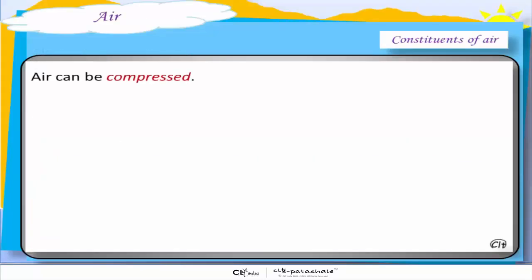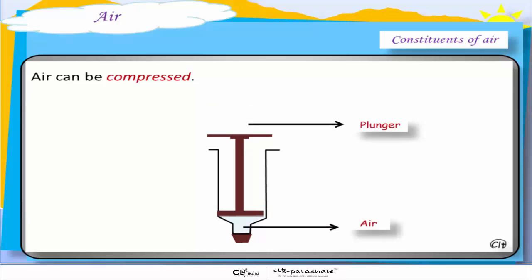Now, air can be compressed. This is the action of a piston where the plunger compresses the air. This is something we use to fill air in the tires of our bicycles or in our cars.